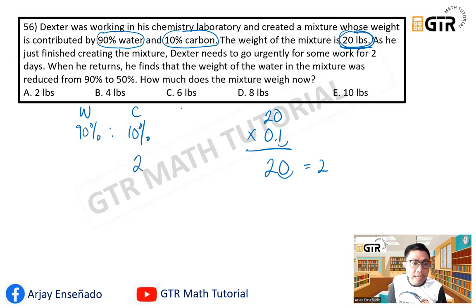The remaining, the total is 20. So therefore, if 2, if 10% of the total is 2, so therefore, the remaining will be 18. So 18 is to 2. The water is 18, and the carbon is 2 pounds.